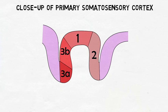Area 3B is densely connected to areas 1 and 2, and when area 3B receives touch information, that information is then sent to areas 1 and 2 for more complex processing. Area 2 is also involved with proprioception.